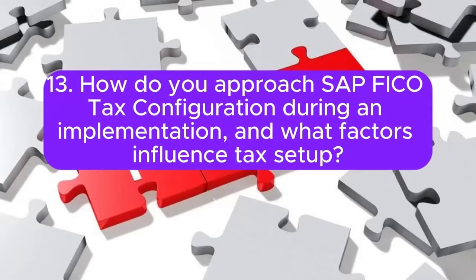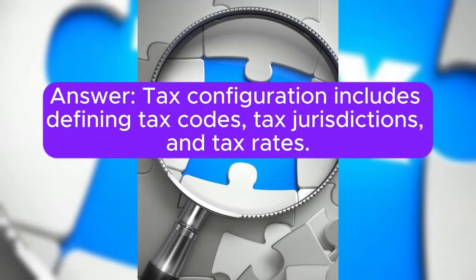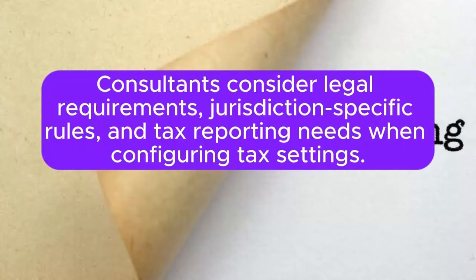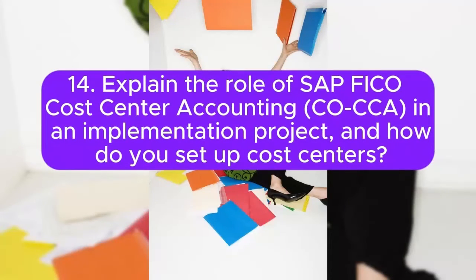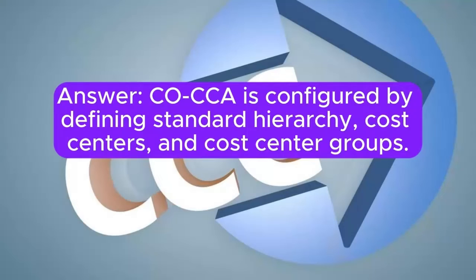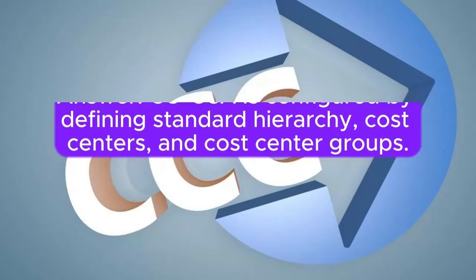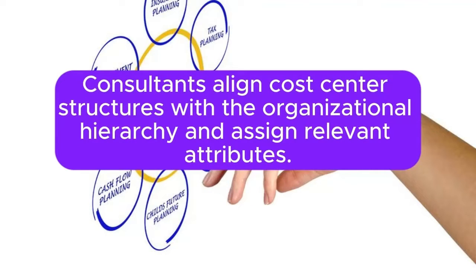Question 13: How do you approach SAP FICO tax configuration during an implementation, and what factors influence tax setup? Tax configuration includes defining tax codes, tax jurisdictions, and tax rates. Consultants consider legal requirements, jurisdiction-specific rules, and tax reporting needs when configuring tax settings. Question 14: Explain the role of SAP FICO Cost Center Accounting (CO-CCA) in an implementation project, and how do you set up cost centers? CO-CCA is configured by defining standard hierarchy, cost centers, and cost center groups. Consultants align cost center structures with the organizational hierarchy and assign relevant attributes.